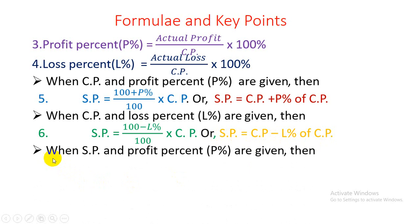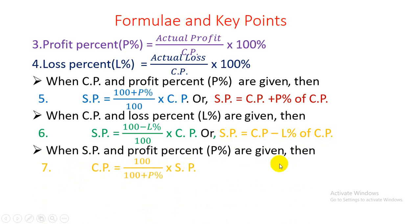When SP and profit percent (P%) are given, then CP = [100 / (100 + P%)] × SP.